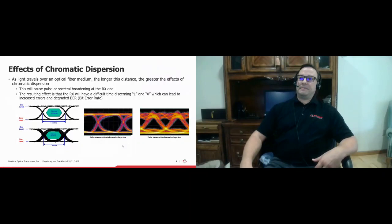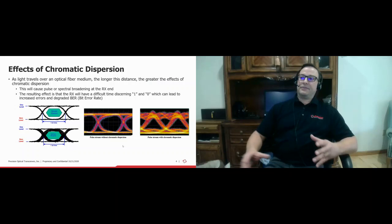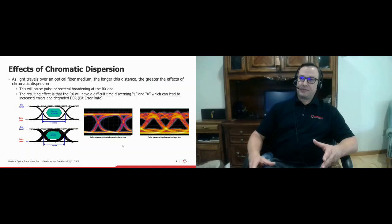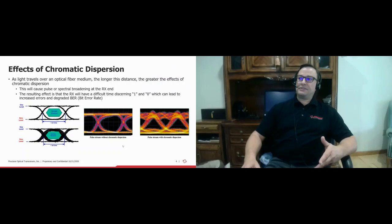What are the effects of that spread? The longer the distance, the greater the effects of chromatic dispersion — the pulse spreads out more and more as distance increases. This causes pulse or spectral broadening at the receive side of the signal. Your transceiver on the receive end sees a much wider dispersive signal than what the transmitter initially transmitted. The resulting effect is that the receiver can have difficulty discerning a 1 or 0 in NRZ digital signaling, leading to increased errors and a degraded bit error rate.